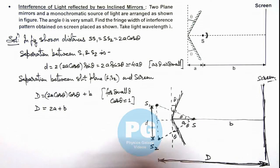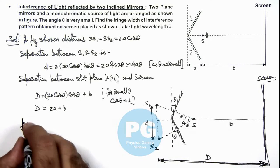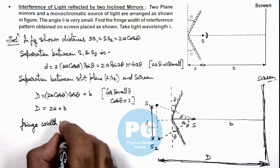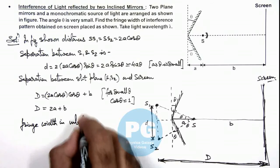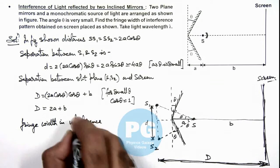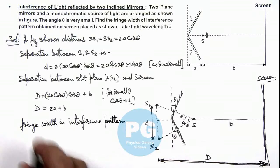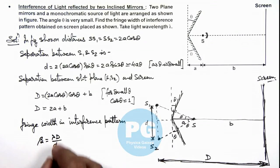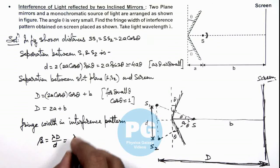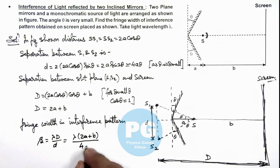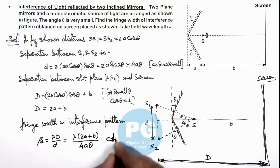So now in this situation if we calculate the fringe width in interference pattern, from YDSE we already studied that fringe width beta is given as lambda D by small d. So here it is lambda multiplied by 2a plus b divided by small d, we write as 4a theta. That is the result of this problem.